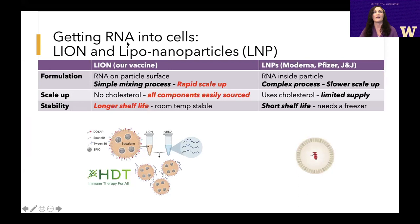One of the challenges for RNA vaccines is that they have to get into cells — that genetic material has to get in to instruct your cells to start making the vaccine. Moderna and Pfizer use lipid nanoparticles, which requires the RNA to be encapsulated into this particle. The issue is this is a complex, slow-to-scale-up process. It also requires a compound called cholesterol, which is currently in limited supply, and could interfere with their scale-up. Additionally, they have limited shelf life at room temperature and really do need freezer conditions.